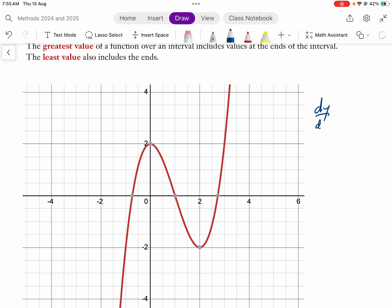So if we do the dy dx and we find where it's equal to zero, we're finding the stationary points and then we're able to determine if they're a maximum or a minimum. We call these local maximums and local minimums.